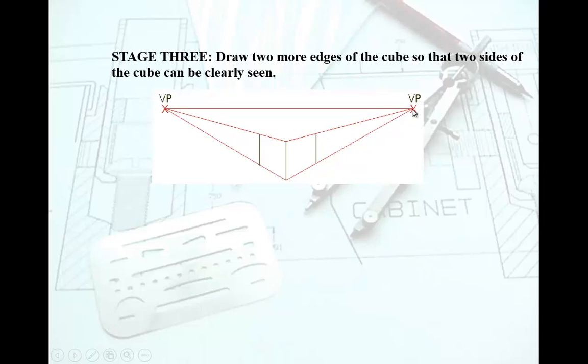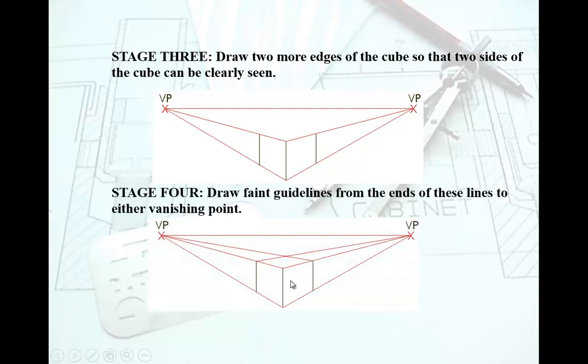I'm going to start from that point going up to VP2 and this point over to VP1, and that in the end gives me some sort of a framework for the box. The further these VP1 and VP2 are, the more realistic your object looks.